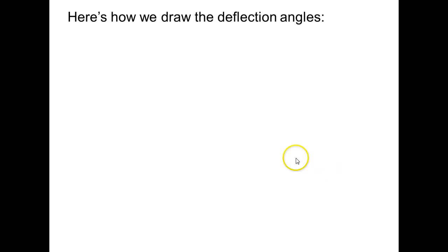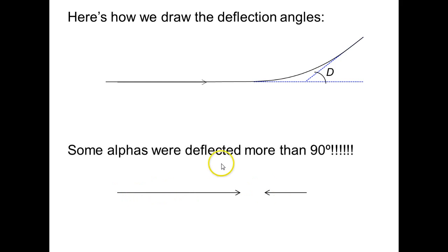Now here's how we draw these angles. If an alpha particle comes in like this, it approaches the gold and then it gets pushed away, deflected off like this. To draw the angle itself, we extend the straight line of its original path, and then we find the straight line of its final path, and we extend that back to this line, and we measure the angle here. D for deflection angle. If the alpha goes forward and then bounces back like this, that's a deflection angle of more than 90 degrees. In fact, that's a 180 degree deflection.